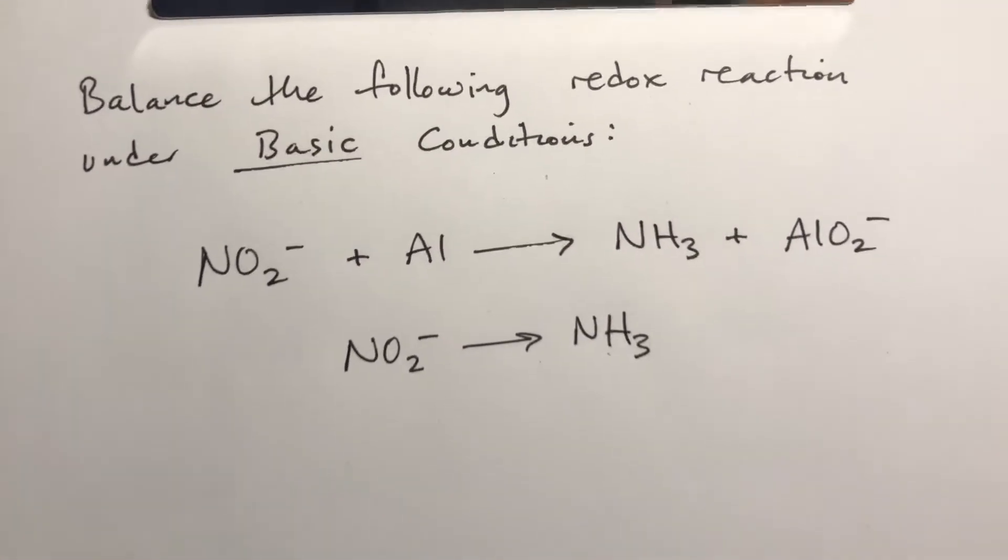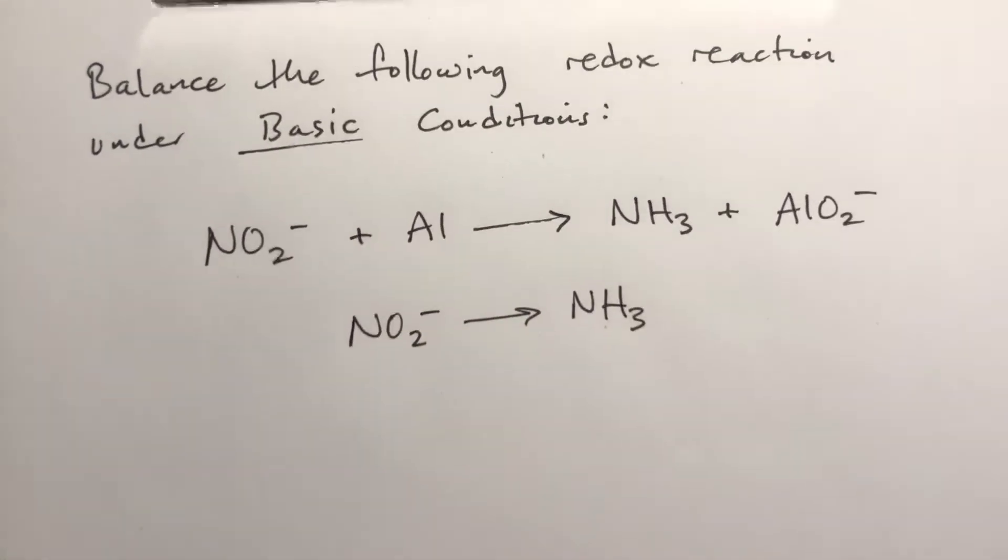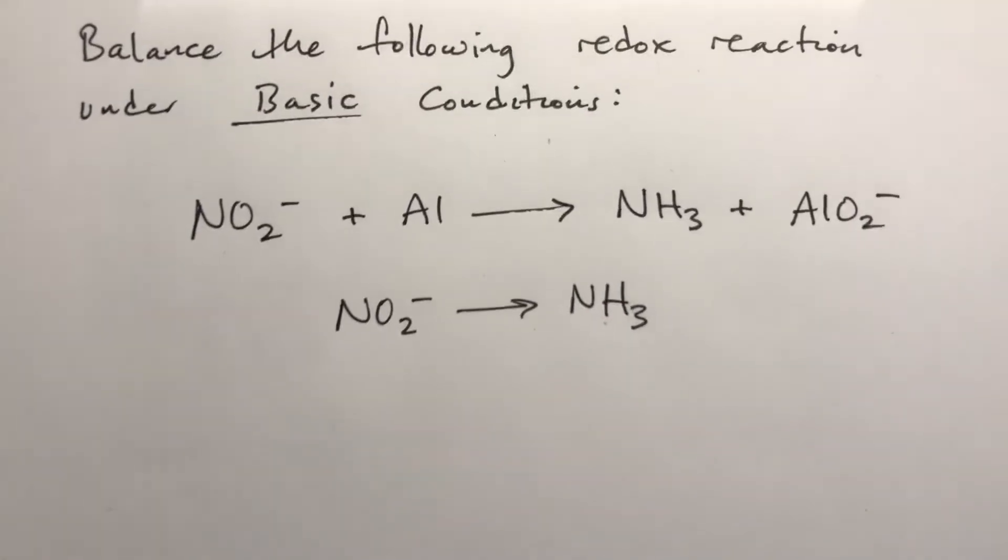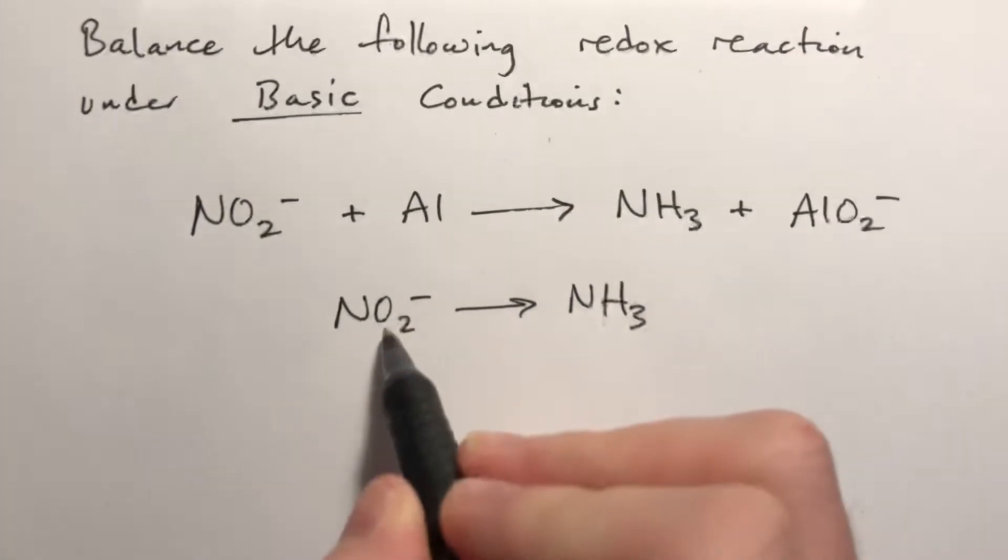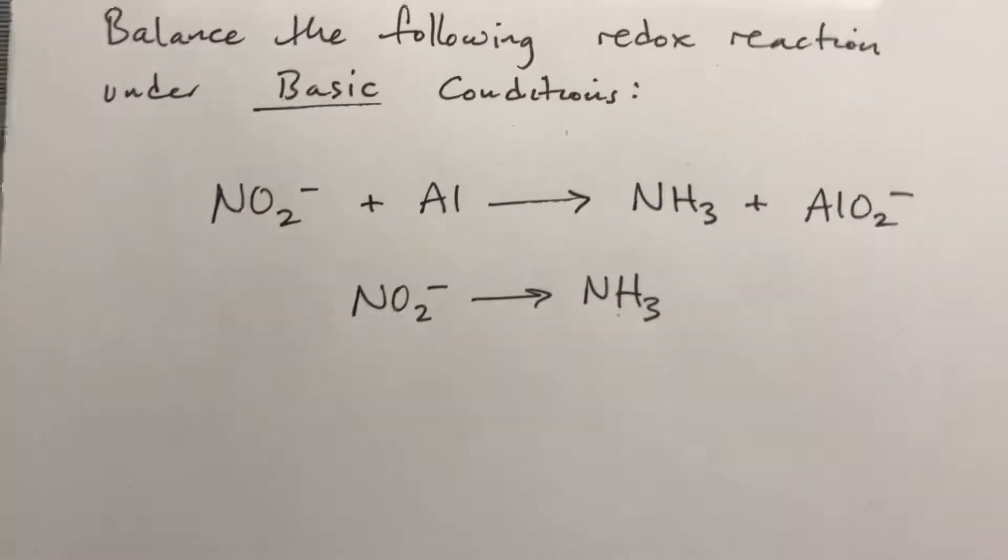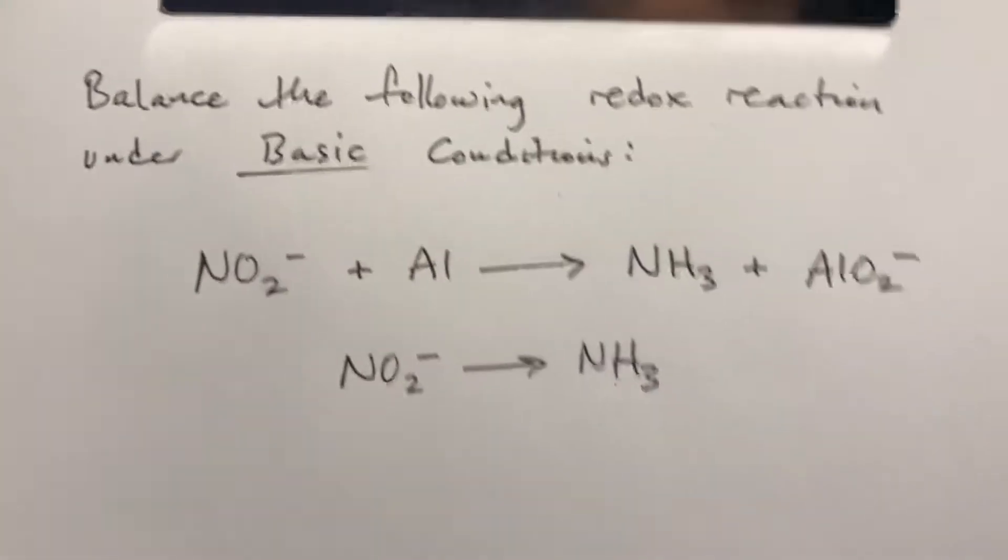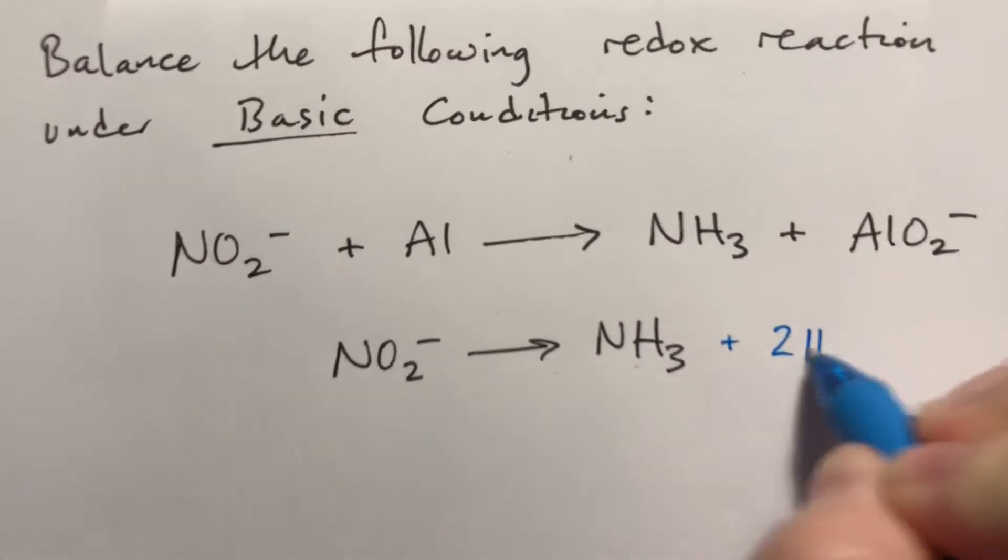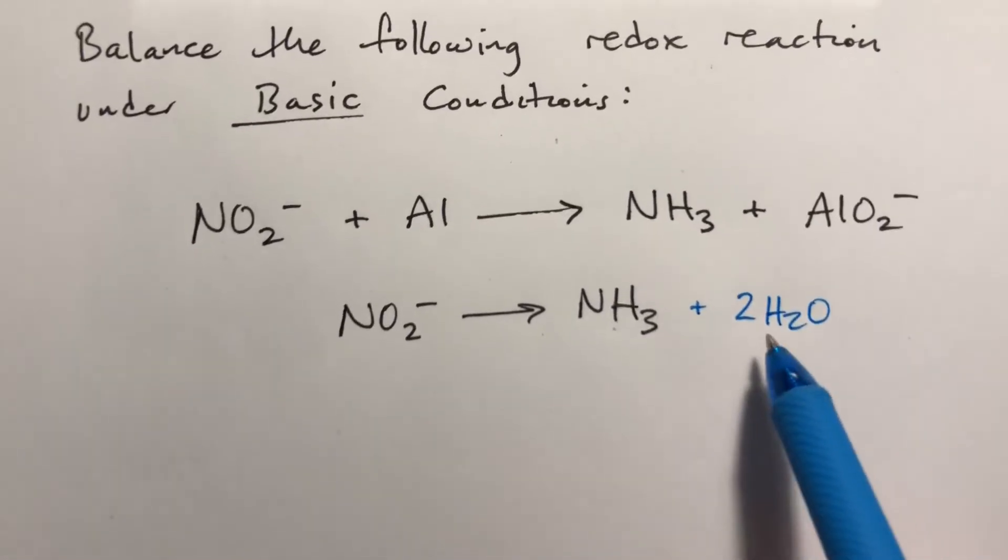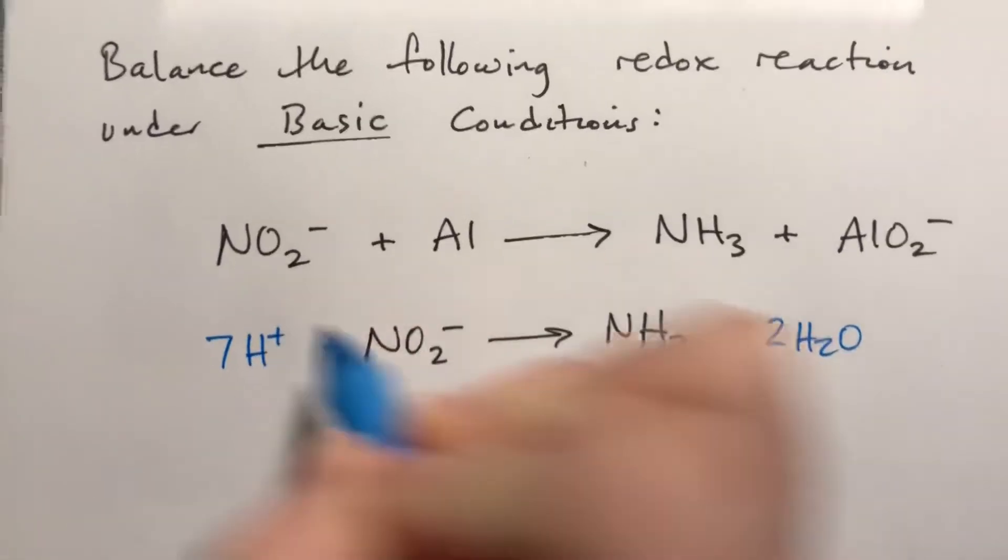Okay, so first things first we have one nitrogen on both sides. We can add water or H plus anywhere we feel like. So let's deal with the oxygens first. So we have two oxygens there. So we get two waters on that side. This gives us four hydrogens here, and another three hydrogens here, which would give us seven H pluses on this side.